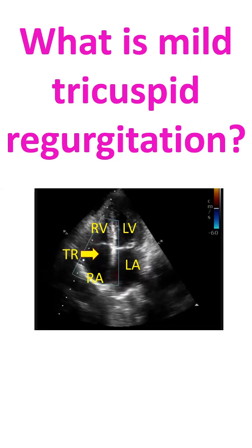This video clip is an illustration of mild tricuspid regurgitation on color Doppler echocardiogram. A bluish mosaic jet can be seen going away from the right ventricle into the right atrium when it is contracting. This is mild tricuspid regurgitation.